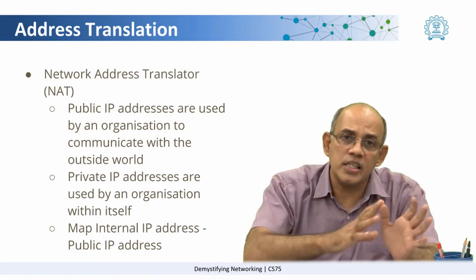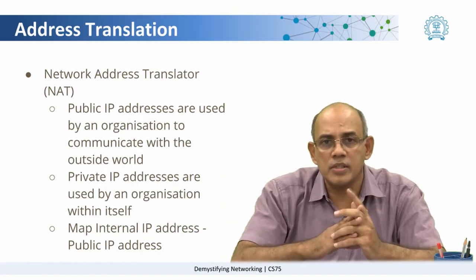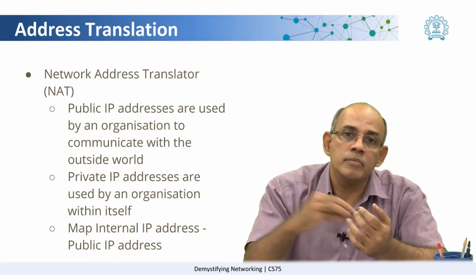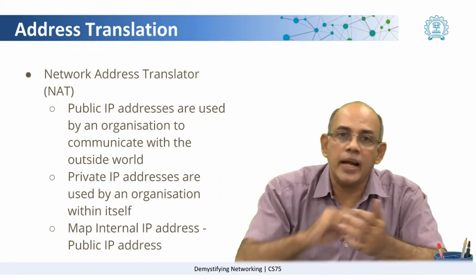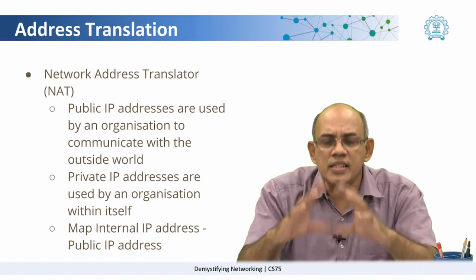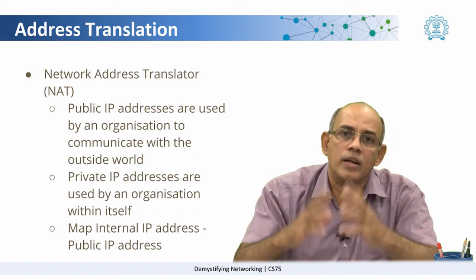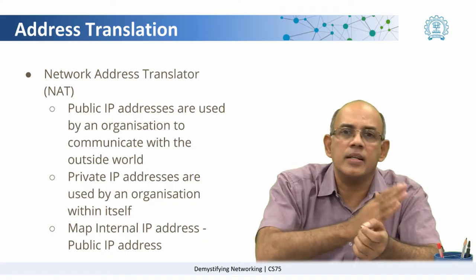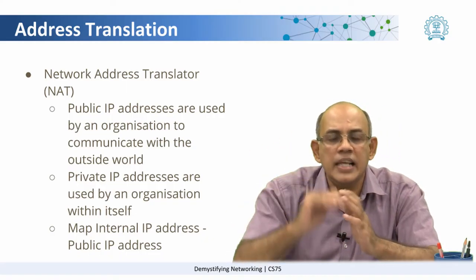Imagine you are sitting on your computer inside the organization and you are accessing a web service. How does it know which machine originated the request and where to send back the reply? There would be a router-like entity called a Network Address Translator, or NAT, which has the job of keeping the mapping of which internal IP address has been sent out on which link as the public IP address. While this may sound complex in the abstract, it is actually fairly straightforward — a very hierarchical mechanism. Most textbooks have lucid explanations of these topics.